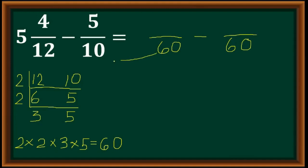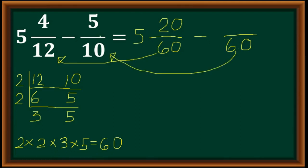Next, we divide the LCD by the denominator. So 60 divided by 12 is 5, times 4 is 20. The whole number — there is a whole number in our given — you just copy it. Next, 60 divided by 10 is 6, times 5 is 30. So we now have 5 and 20 over 60 minus 30 over 60.